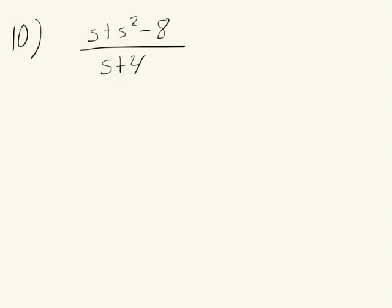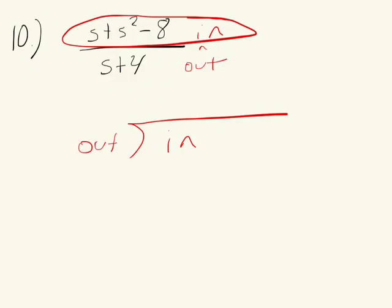Okay, for this problem it says s plus s squared minus 8 divided by s plus 4. In order to set this up as a long division problem, I need to know what goes inside and what goes outside. To remember that, just remember your favorite hamburger place, In-N-Out: the top goes inside, the bottom goes outside.